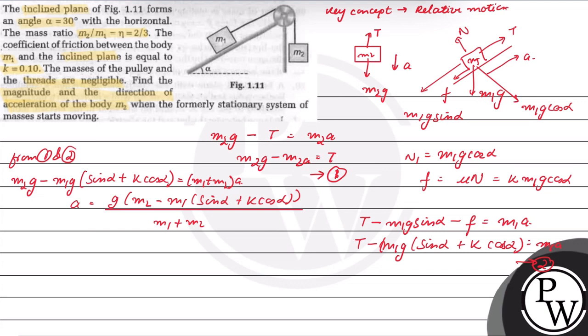From this equation, you can derive that M2 upon M1 should be greater than or equal to sin alpha plus k cos alpha.